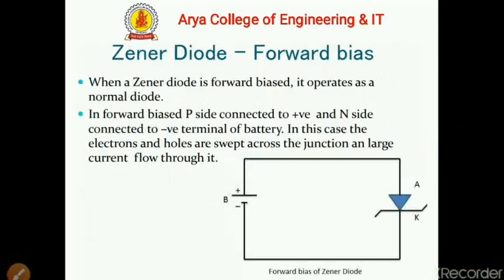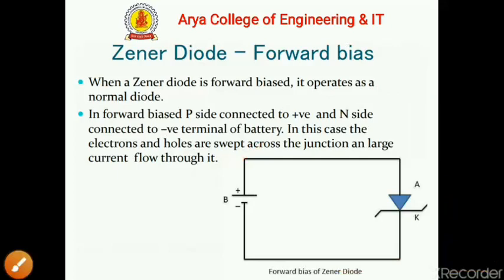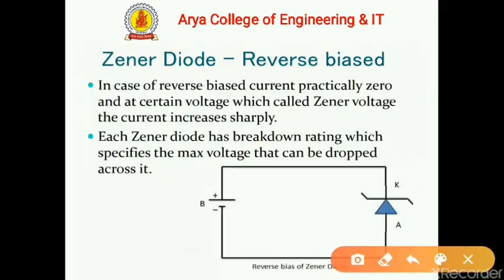There are two types of biasing as discussed in the previous lecture on diodes: forward biasing and reverse biasing. When a Zener diode is forward biased, it operates as a normal diode — the p-side is connected to the positive terminal and n-side to the negative terminal. In reverse biasing, current is practically zero until a certain voltage called the Zener voltage is reached, at which point the current increases sharply.